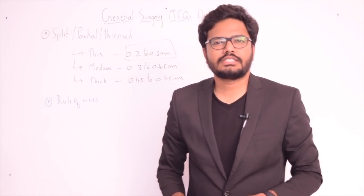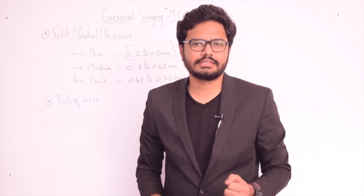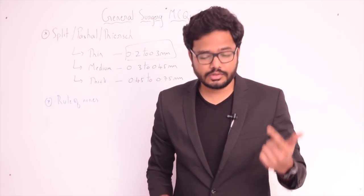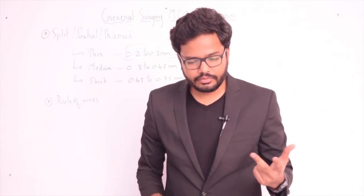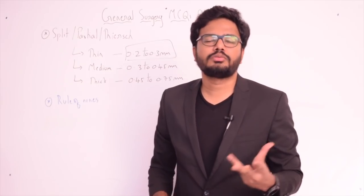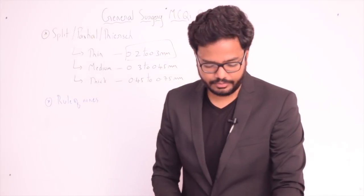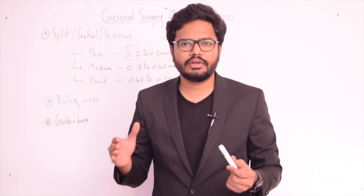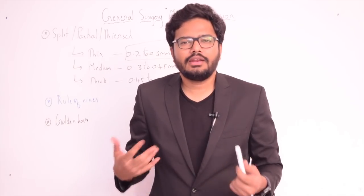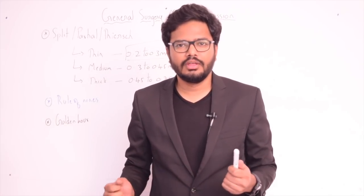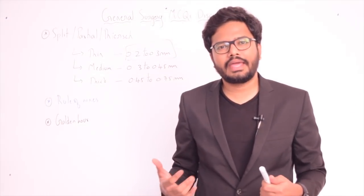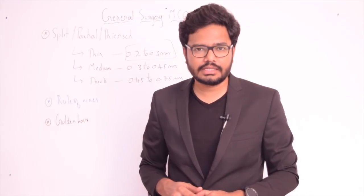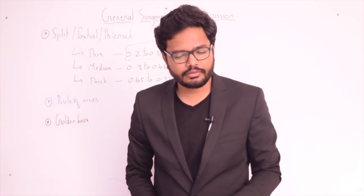Third question: golden hour. Options are — time elapsing from injury to start of definitive treatment in hospital, time from loss of consciousness to provisional treatment, time from definitive treatment to regaining consciousness, or none of the above. The first 60 minutes after injury is considered critical as the body can compensate for shock and trauma. After 60 minutes, compensatory mechanisms diminish. So golden hour is the time from injury to start of definitive treatment in hospital — option A.